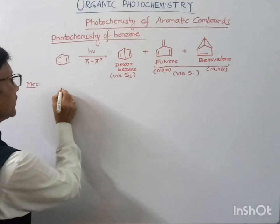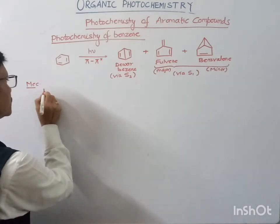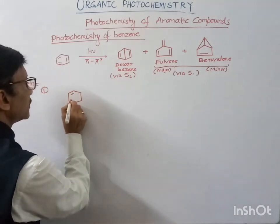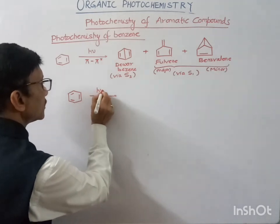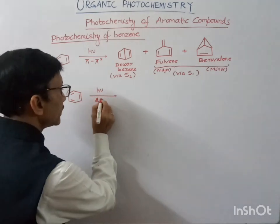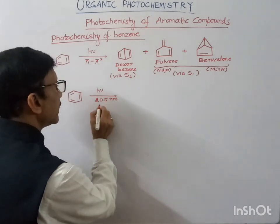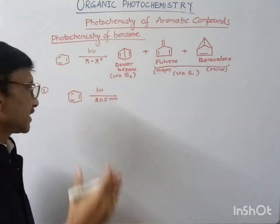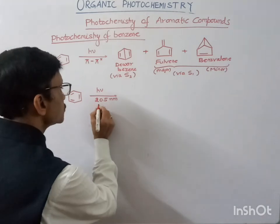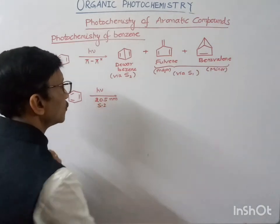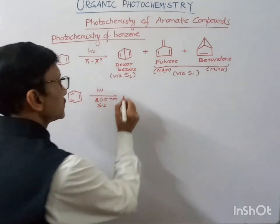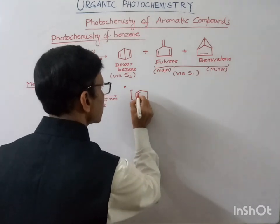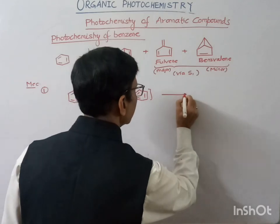Now for the mechanism: suppose this is part one. If we irradiate benzene with light having a wavelength of 205 nanometers, benzene will get excited and it will go into the S2 state.